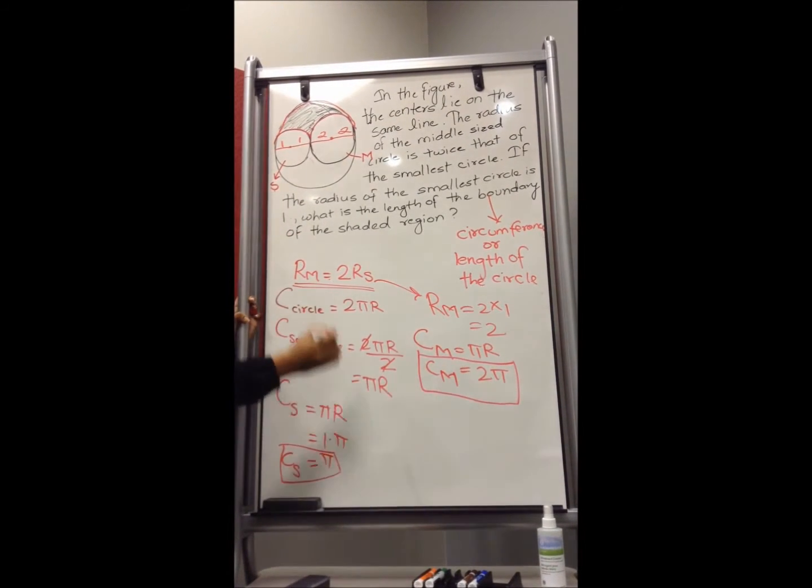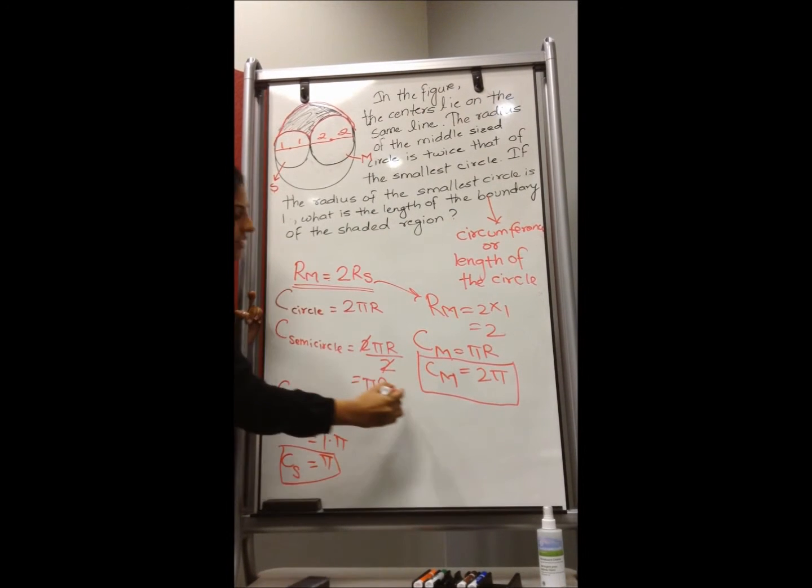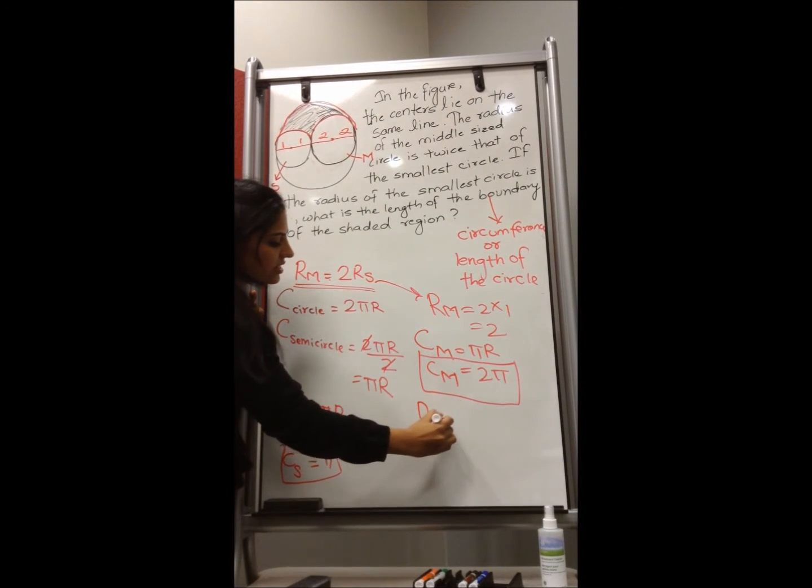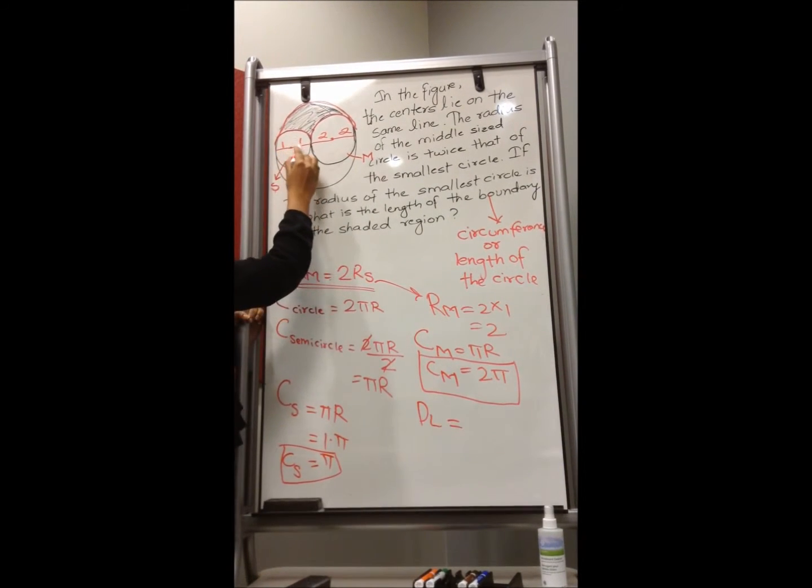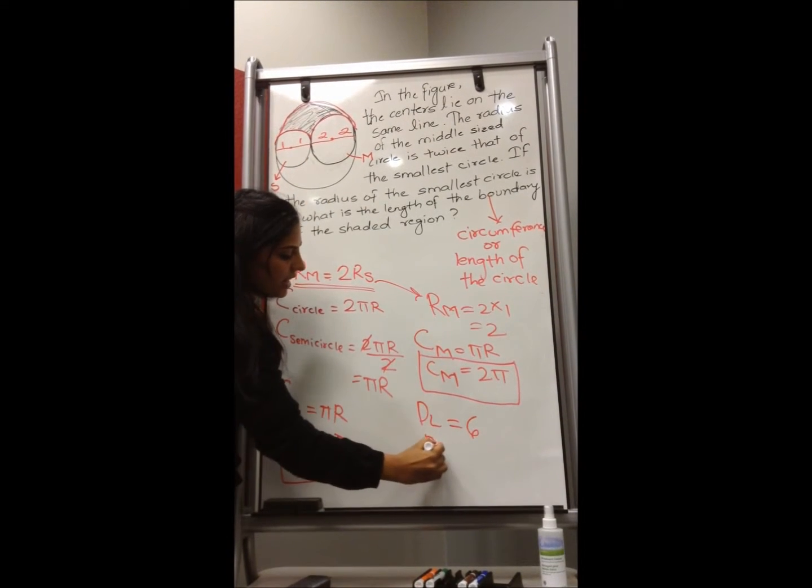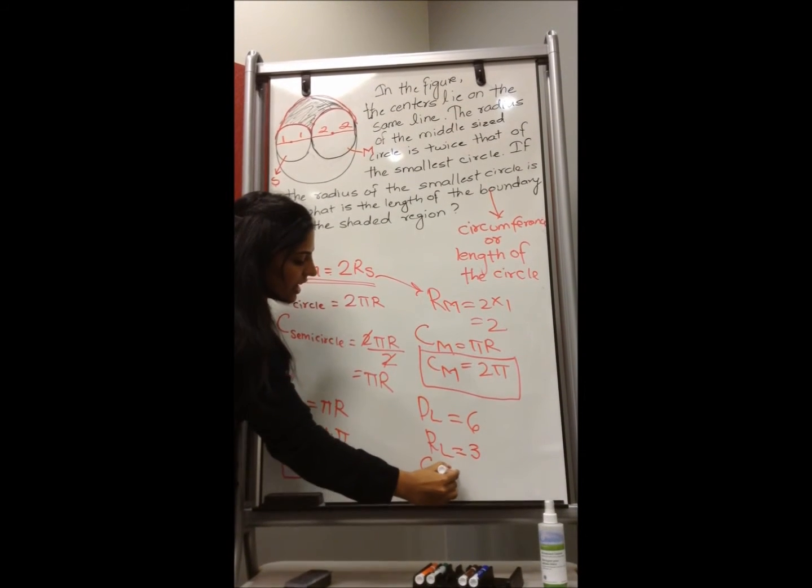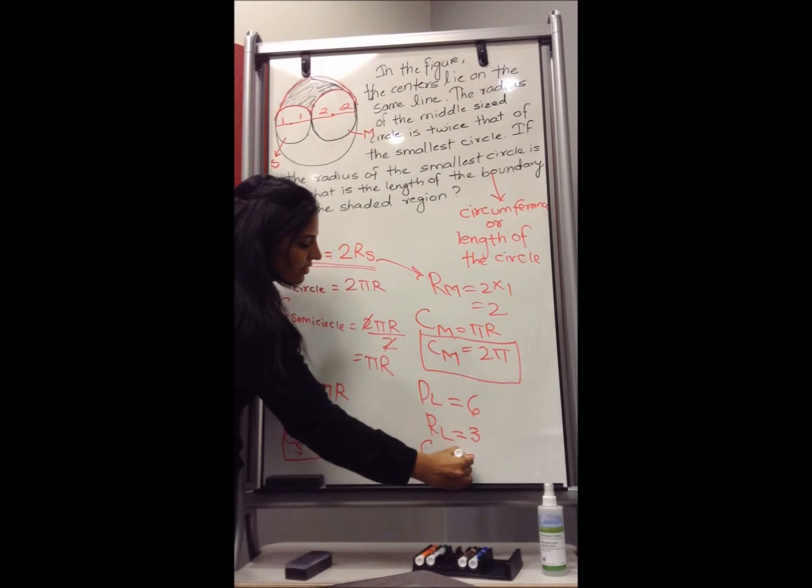And now the last part of the problem, which is the circumference of the semi-circle of the larger circle. In the larger circle, the diameter of the larger circle is 1 plus 1, 2 plus 2 is 4 plus 2 is 6. So the radius of the larger circle is 3. And therefore the circumference of the larger circle is 3 pi.